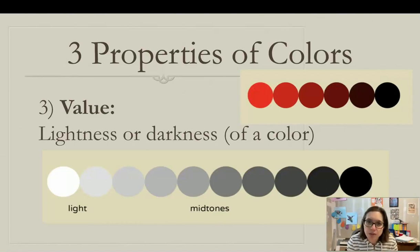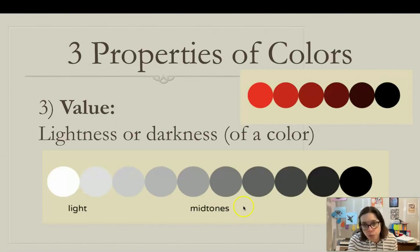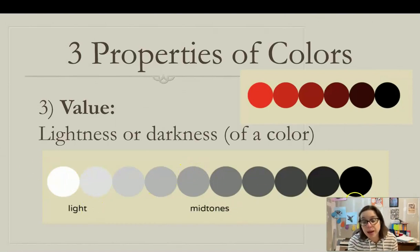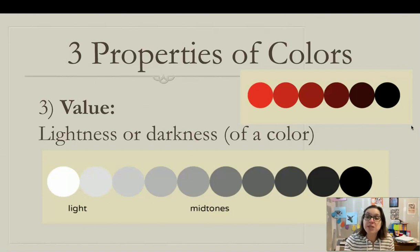Then there's value — the lightness or darkness of a color. We're very familiar with black and white: white, gray, black. But colors also have a value of lightness and darkness, and this is different from intensity.